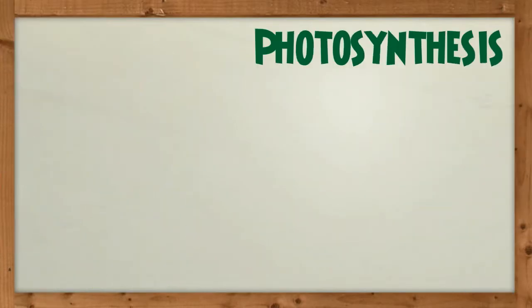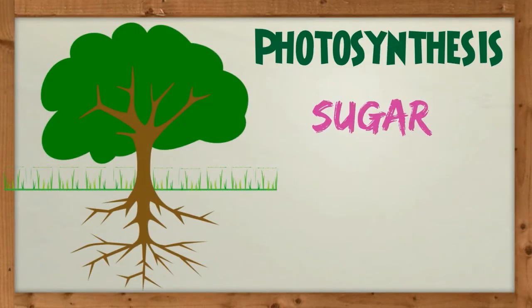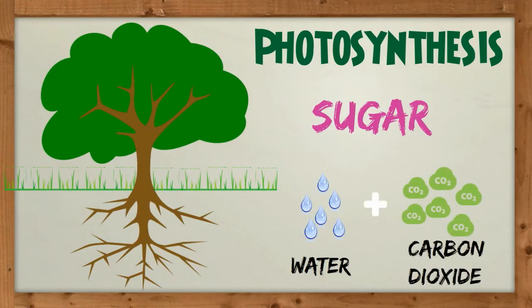Photosynthesis is a process by which green plants produce sugar from water and carbon dioxide. Sugar is food for the plant.